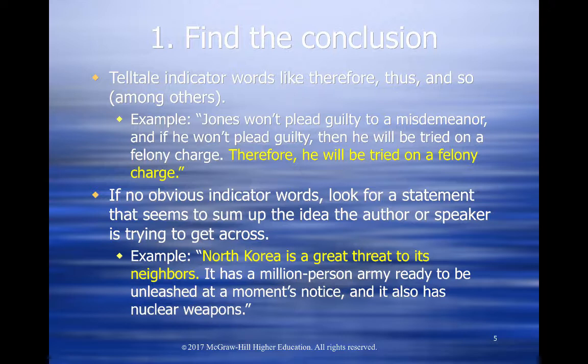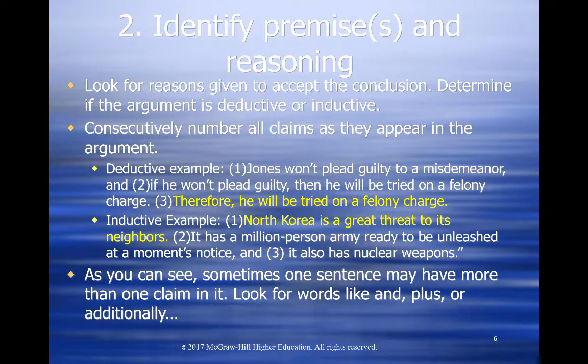This example shows that: "North Korea is a great threat to its neighbors. It has a million-person army ready to be unleashed at a moment's notice, and it also has nuclear weapons." The million-person army and nuclear weapons are evidence that North Korea is a great threat. Once you've identified the conclusion, look for all the evidence given to accept it and number every part of the argument consecutively. In the Jones example, claims 1 and 2 are premises and claim 3 is the conclusion — a deductive argument, since the conclusion is the only possible one based on the premises.